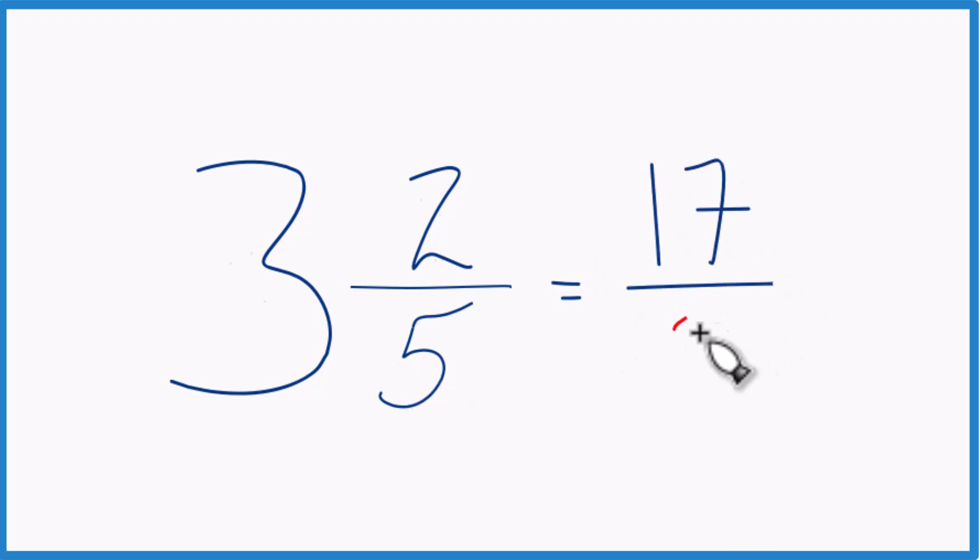Bring the denominator across, and the mixed number 3 and 2 fifths equals the improper fraction 17 fifths. It's improper because 17, that's larger than 5.